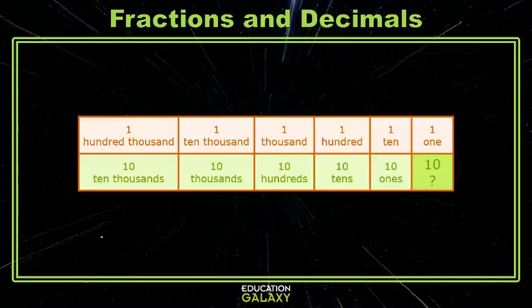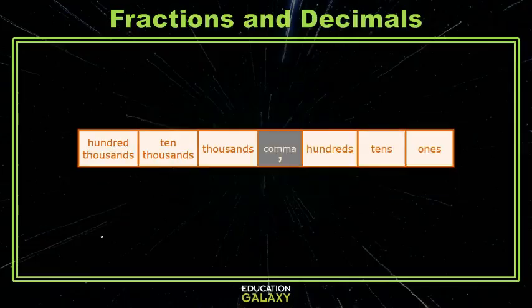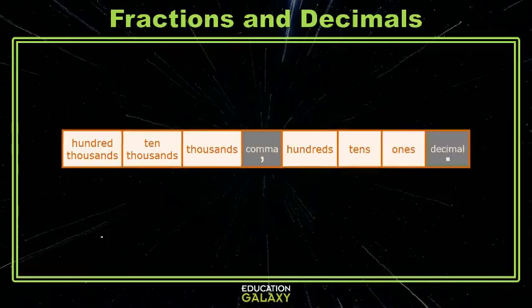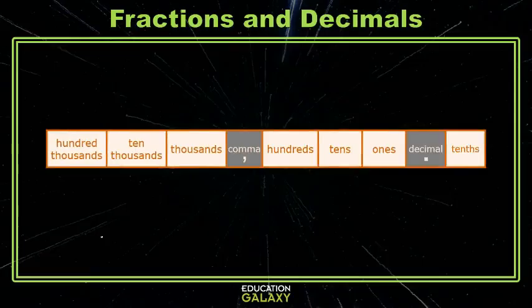So on that place value chart, ten of what make up one? If you said tenths here, again, you are correct. So we need to know how to write these tenths. Remember when we had bigger numbers, sometimes we needed a comma to separate some of them. Well, tenths are going to need a new thing called a decimal. It's just a dot that we put between the ones and the tenths, so we know where all the numbers are.